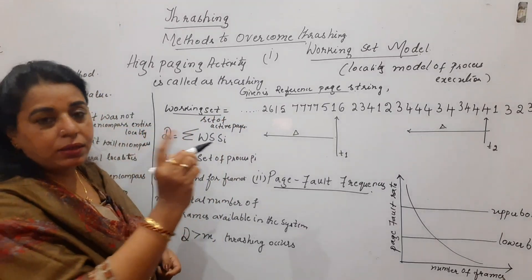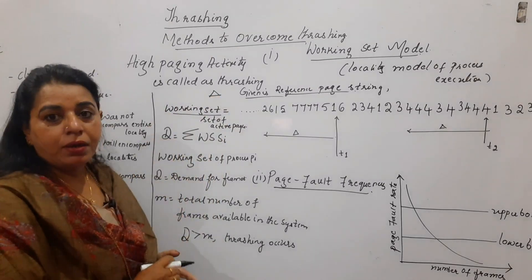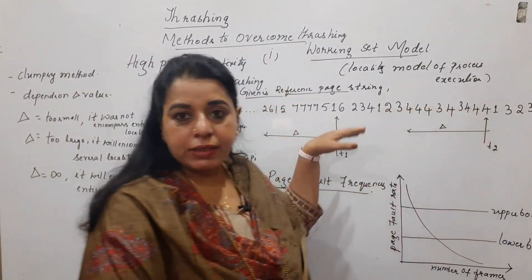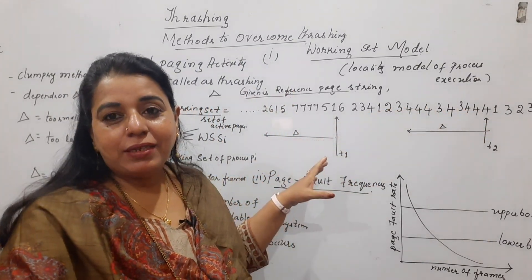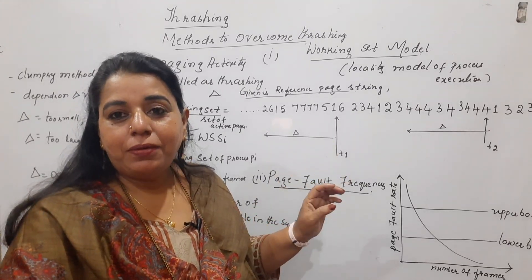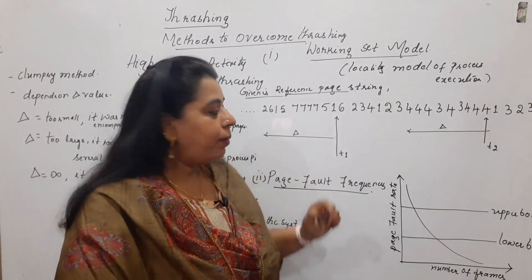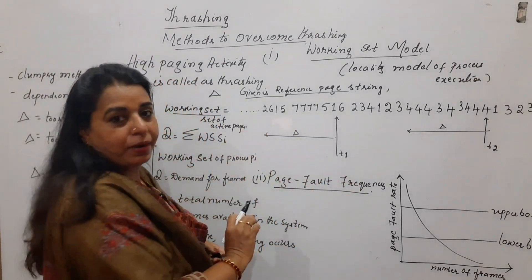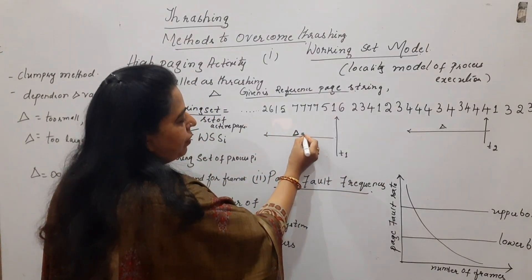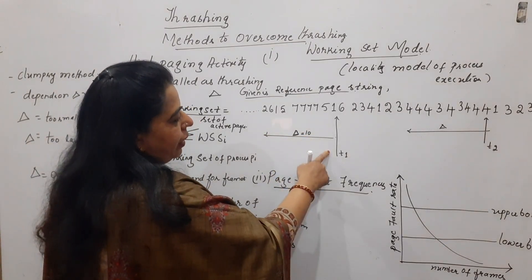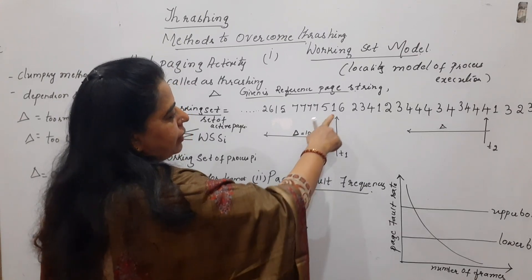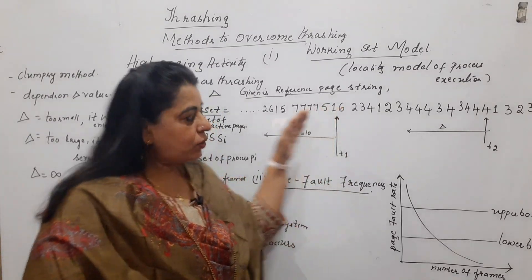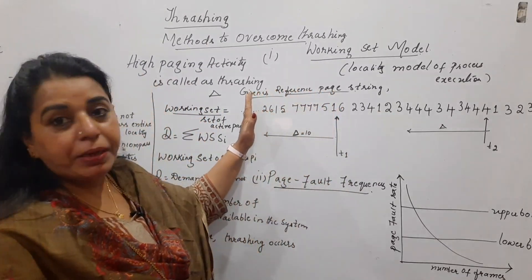The working set is the set of active pages and is always denoted by the symbol delta (Δ). First, I have written a reference string. You need to examine the pages at different times — at time t1, at time t2, at time t3. For that, we need to decide how many pages to be examined by setting the value for delta. In this case, let us set the working set window delta to be 10. At time t1, I need to examine the set of 10 pages — the previous 10 pages used by the process.